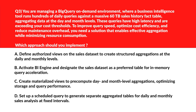Now we have a question about a massive dataset of 60 TB. Option A says define authorized views. Authorized views only control access but don't pre-compute results, leading to redundant computation — incorrect. Option B says activate BI Engine. BI Engine optimizes in-memory queries but is not suited for large-scale fact tables like a 60 TB dataset — incorrect.